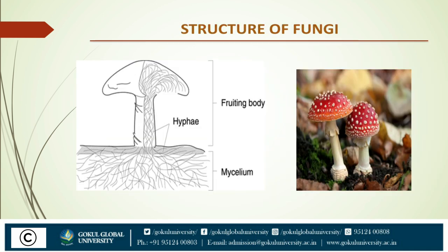The unicellular fungus is called yeast and the multicellular fungus is called mold. Mushrooms are larger and multicellular. Yeast are non-filamentous unicellular fungi that are spherical and oval. The vegetative structure or body of mold or fungus is called the thallus. The thallus consists of long filamentous cells joined together, known as hyphae. A network of hyphae is known as mycelium.